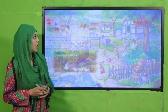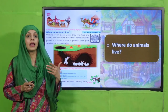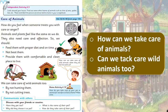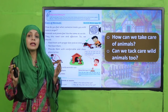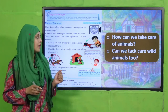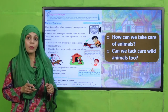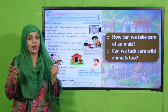Where do animals live? Some animals live underground and make burrows, like rabbits and mice. Some animals live in nests and trees, like different birds. How can we take care of wild animals? We can take care of wild animals by not hunting them and not destroying their natural habitat or cutting down trees.